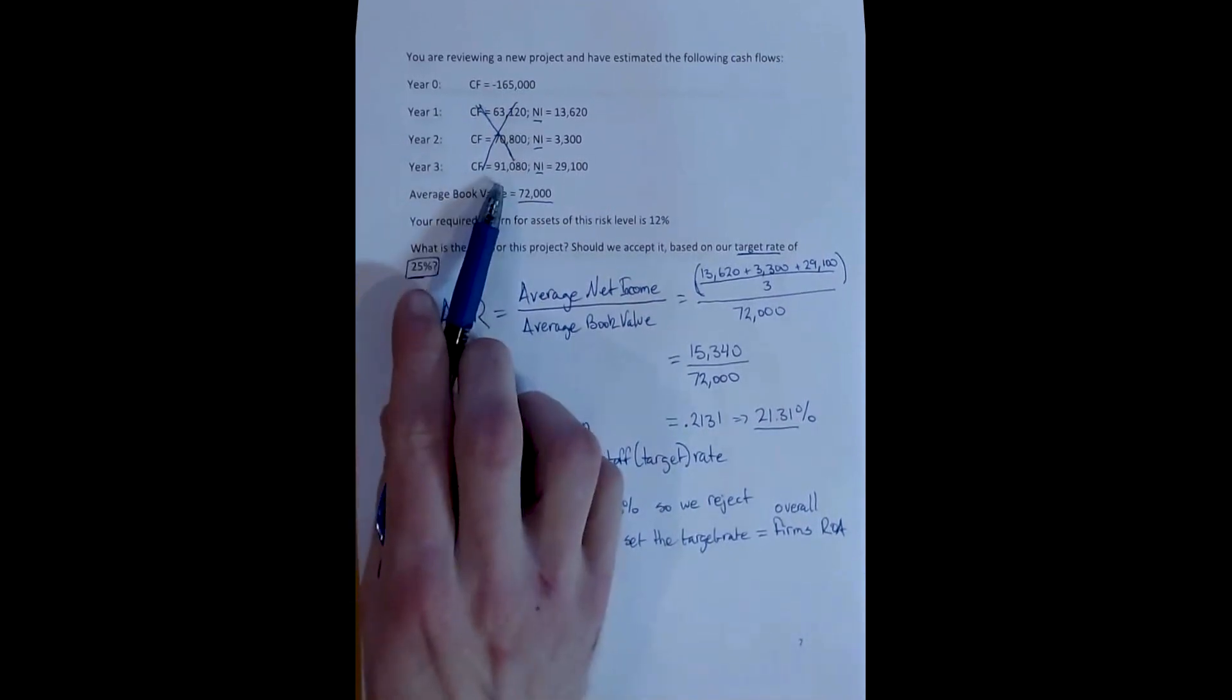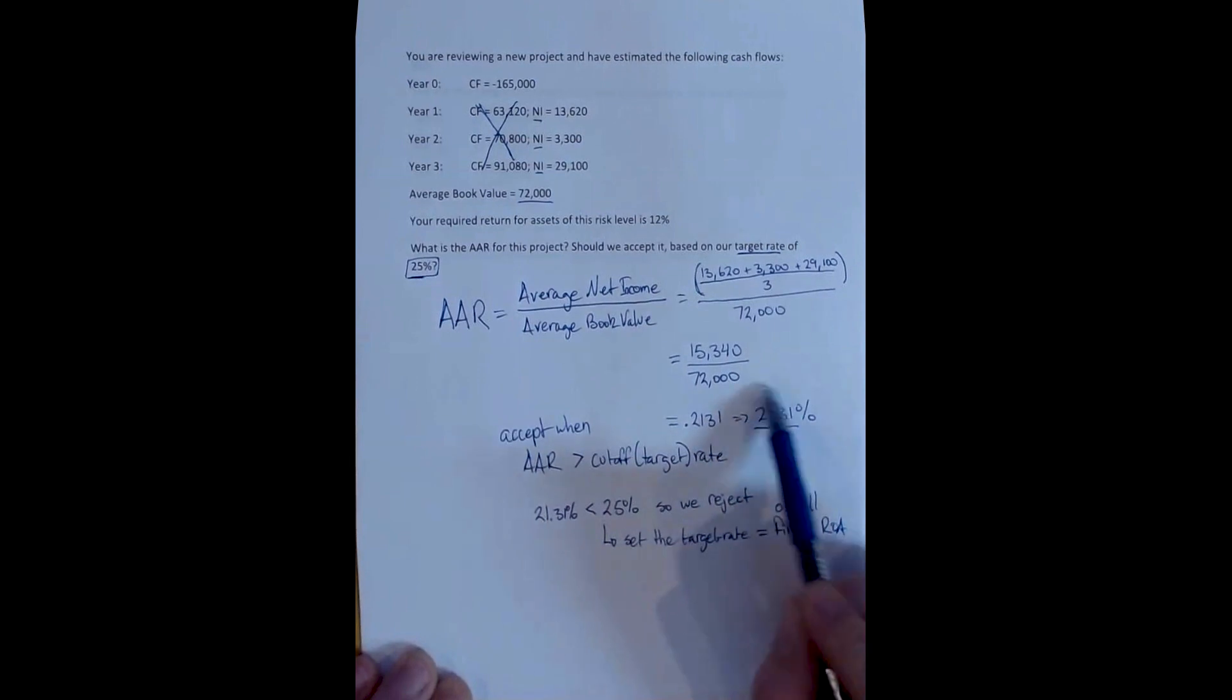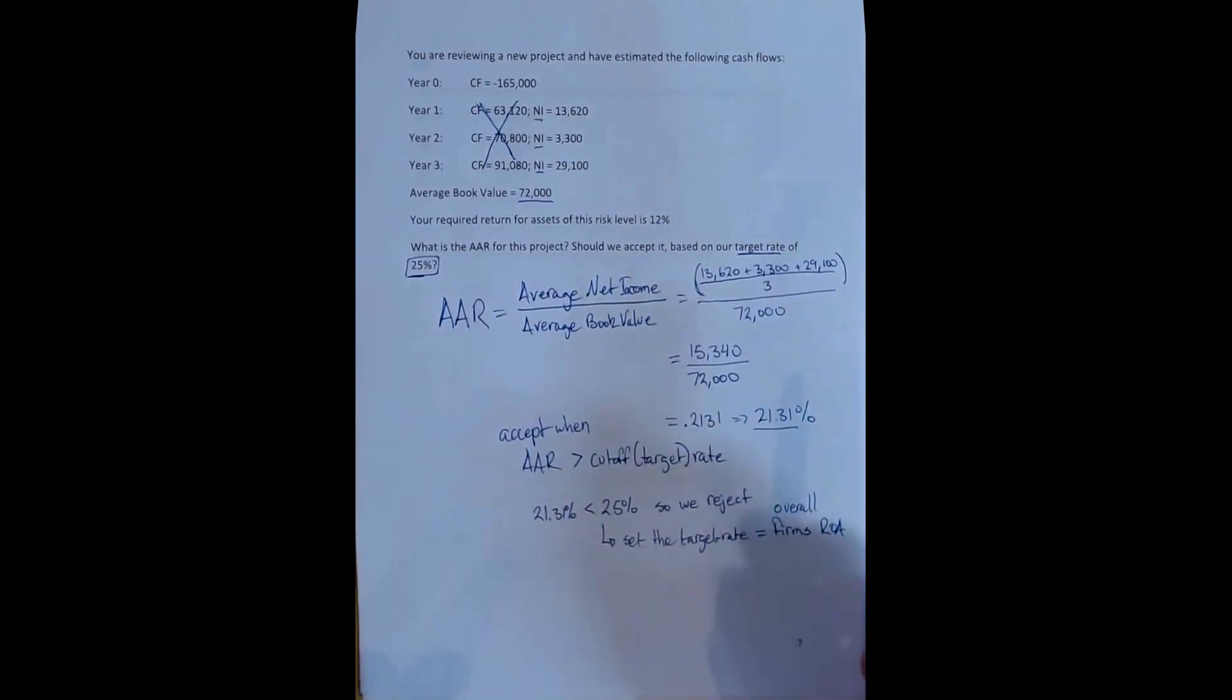We know it's a good project because the NPV is greater than zero. We also can see that it's a good project because the evidence here suggests an average accounting return or a project-level ROA of 21%, which is great. But we've rejected it because the firm itself is better. And that's kind of a weird thing to think about, that a firm might reject a project because it's not good enough.